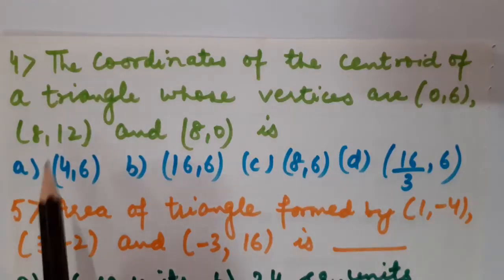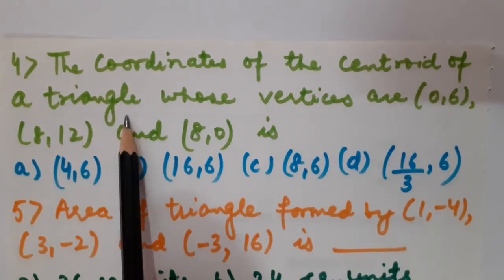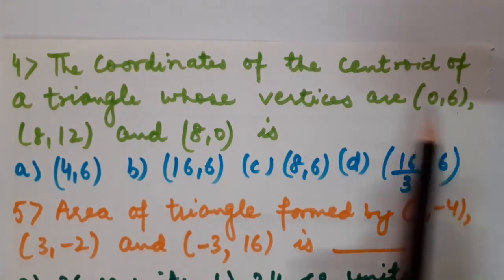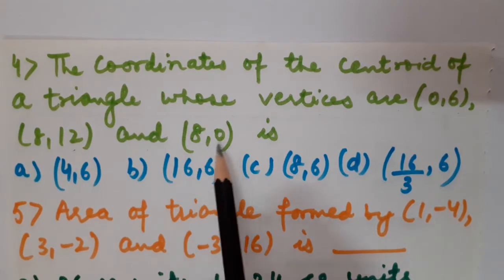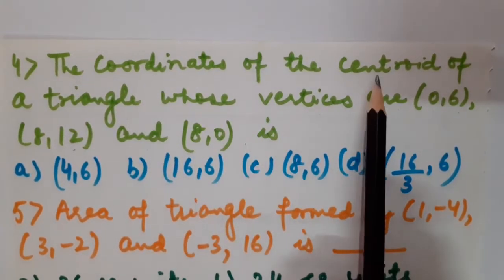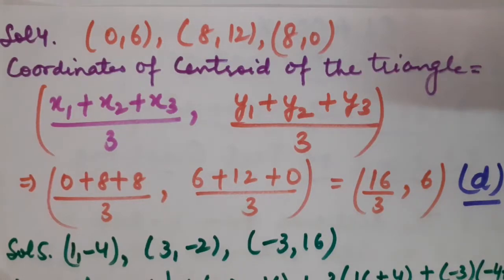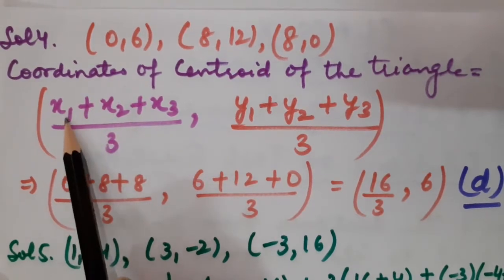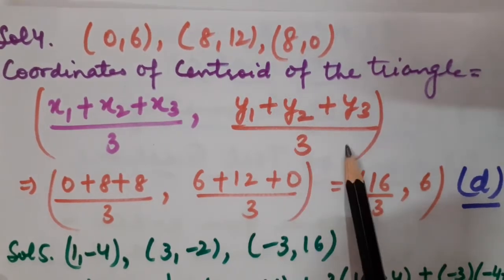Question number 4: calculate the coordinates of the centroid of the triangle whose vertices are (0,6), (8,12) and (8,0). The coordinates of the centroid of a triangle are ((x₁+x₂+x₃)/3, (y₁+y₂+y₃)/3). Add all x-coordinates and divide by 3; in the same manner, add all y-coordinates and divide by 3.